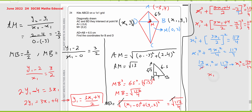Taking the square root: X1 equals 3. To get Y1, substitute X1 equals 3 back into the equation: Y1 equals (3 times 3 plus 4) over 2, which is (9 plus 4) over 2, equals 13 over 2, so Y1 equals 6.5. The coordinates for point B are therefore (3, 6.5).